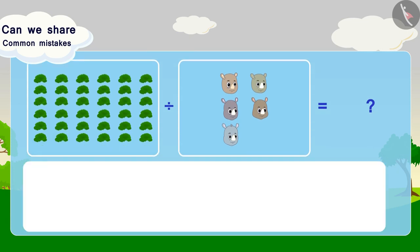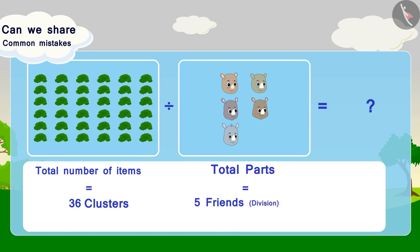In this option, we see that total number of items equals 36 clusters. Total parts equals 5 friends. We have to find out how many clusters are there per friend, per part.